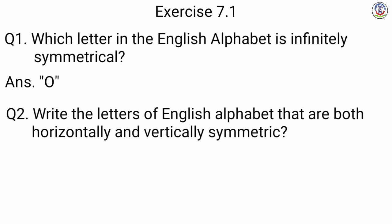Question number 2: Write the letters of the English alphabet that are both horizontally and vertically symmetric. हम लोग को ऐसे letters बताने हैं जो horizontally और vertically दोनों symmetric हों, यानि line of symmetry horizontally भी draw हो और vertically भी. Our answer is H, I, O, and X — these 4 alphabets की line of symmetry horizontally भी होती है और vertically भी.